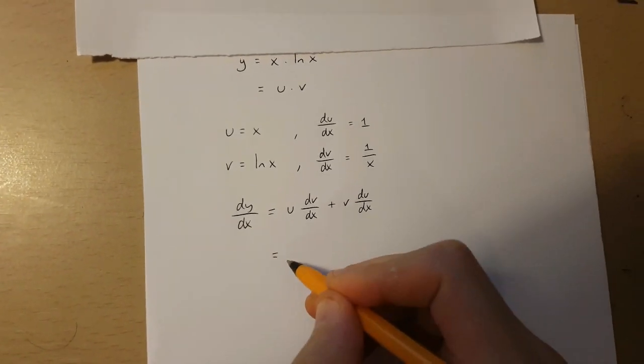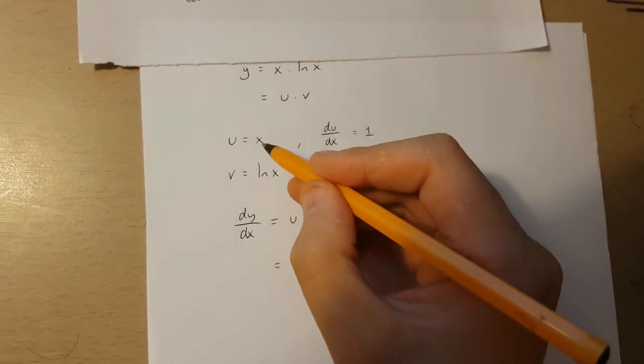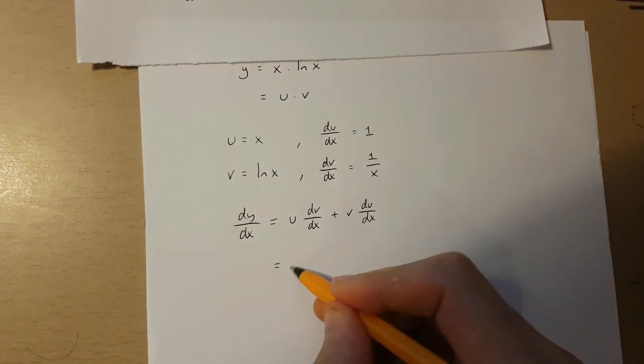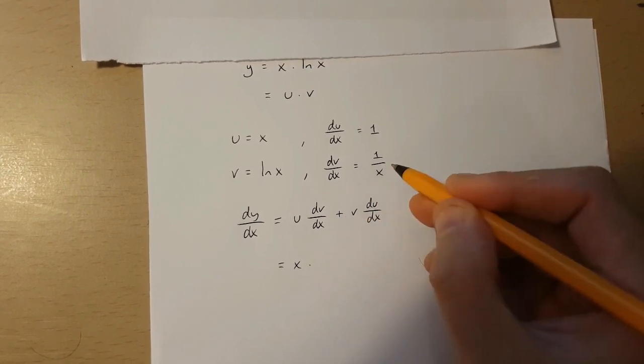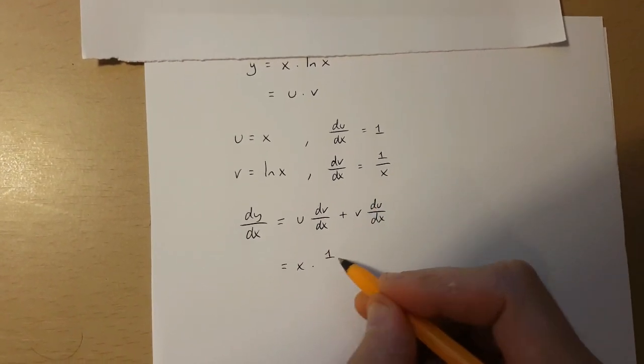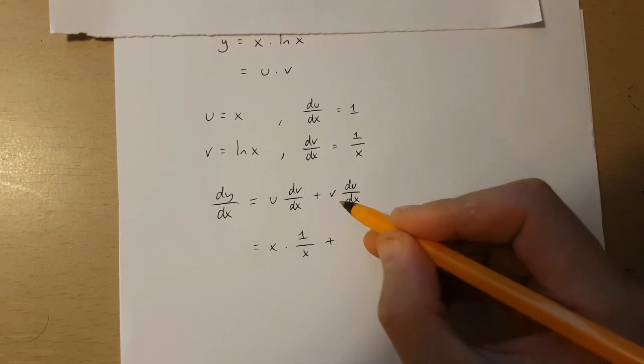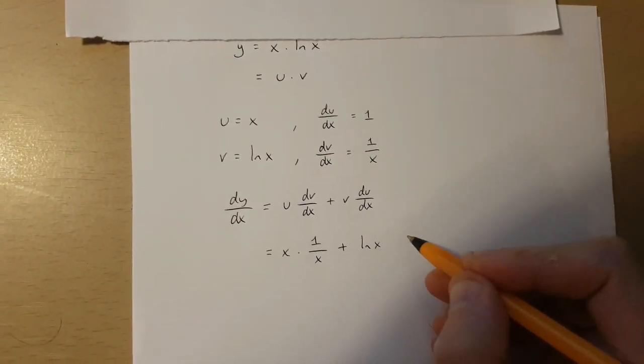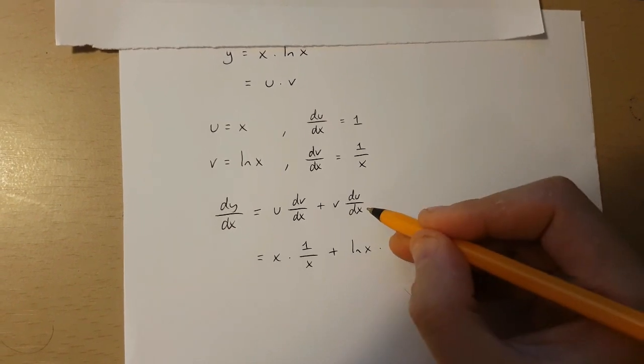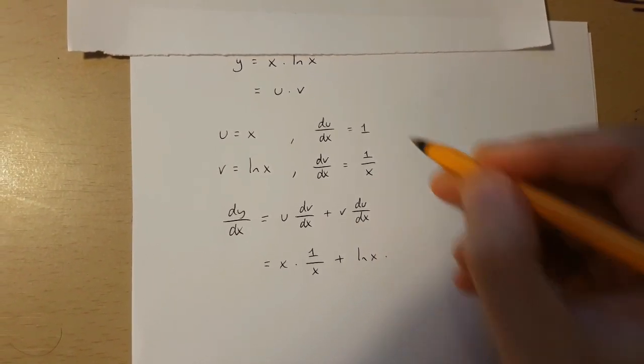And this is equal to x, because x is u, times dv over dx which is 1 over x, plus v which is ln x times du over dx which is 1.